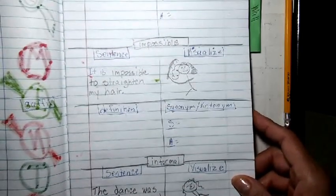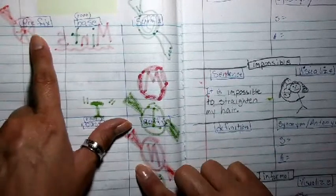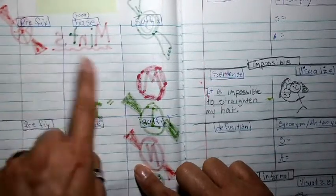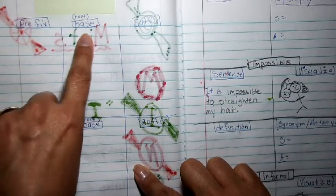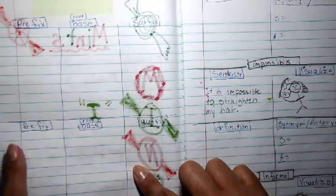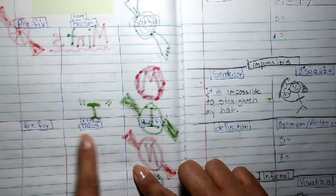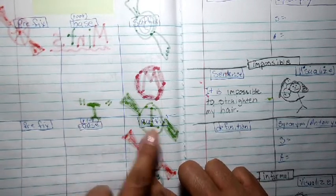You can pause this video anytime you like. On the left side, I'm going to put my prefix, my three columns. The first one's going to be the prefix, my base word or root word, my suffix. And then I'm going to put prefix, my base or root word, and my suffix.